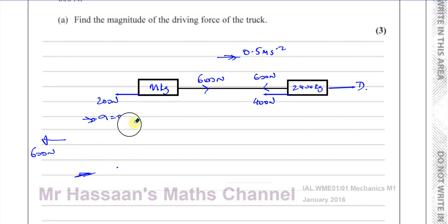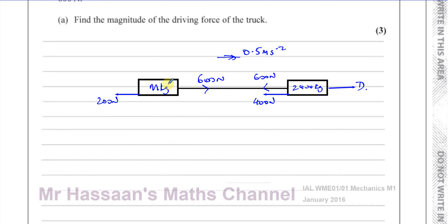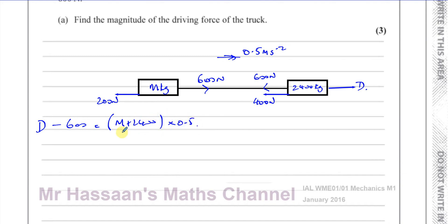Taking the whole situation as one particle — because they're moving in the same straight line connected by a light inextensible string — I could do that if I knew the mass of the trailer. Then I could say the driving force minus the total resistance of 600 equals the total mass times the acceleration of 0.5. But since I don't know the mass of the trailer, I can't find the driving force this way.